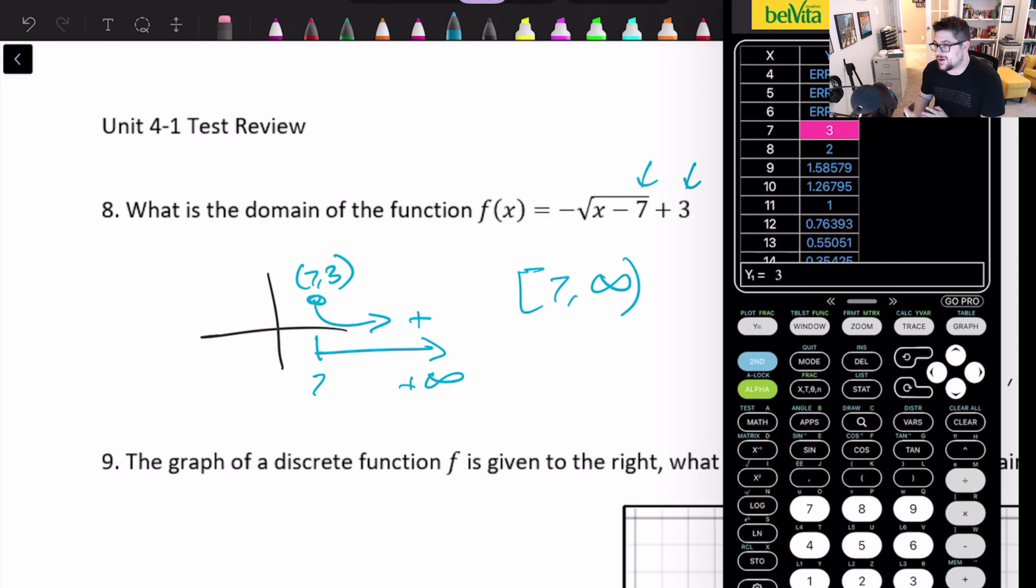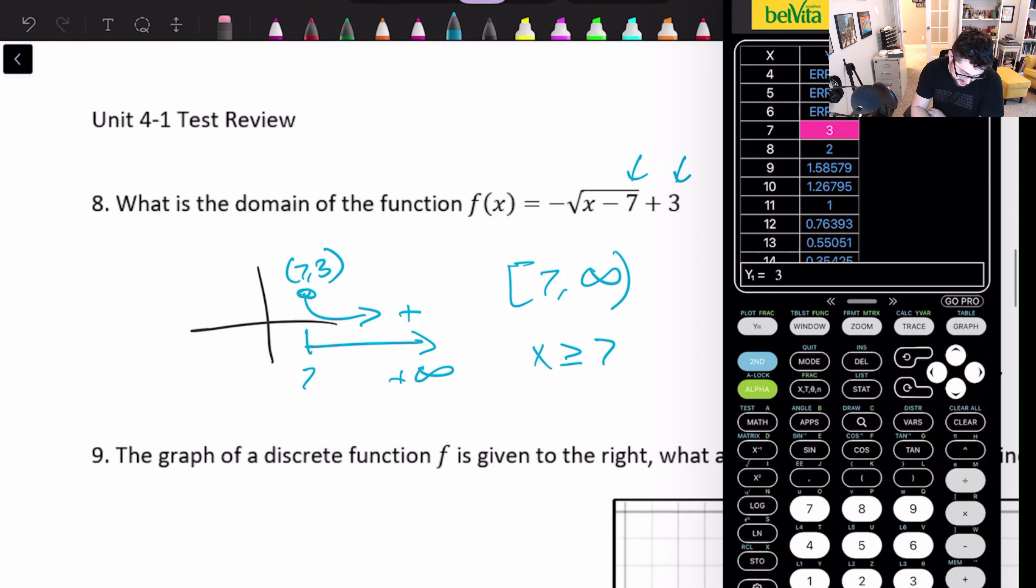And basically it's going to start from one of those numbers. It's going to go to either positive or negative infinity. We can also write this as x is greater than or equal to 7. Same thing means the same. So it's just the possible x values.